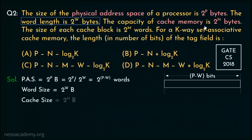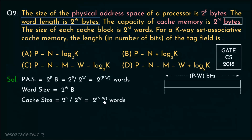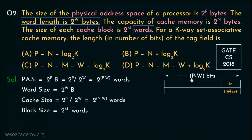The cache memory size is 2 to the power n bytes. We also need to convert that — dividing the cache size by the word size gives us 2 to the power (n minus w) words. The size of each cache block is 2 to the power m words — since it's already in words, no conversion is needed. This gives us the block offset as m bits. Therefore, from the p minus w bits of physical address, the least significant m bits will be used for block or line offset.